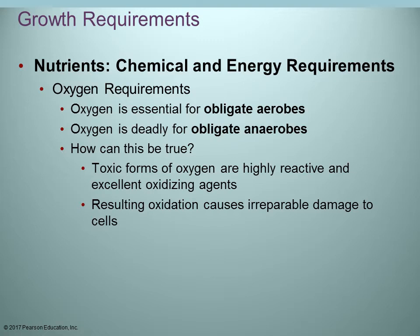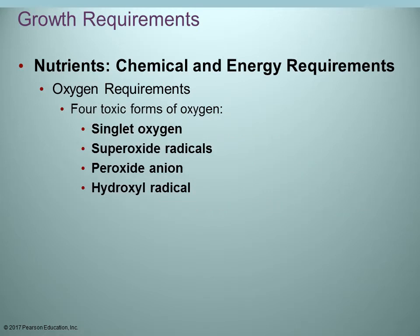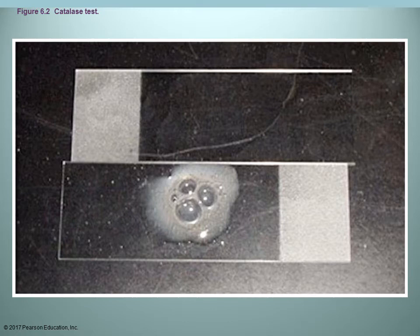In terms of oxygen requirements: if oxygen is absolutely necessary, it's known as an obligate aerobe. If oxygen can be fatal and deadly, the organism is known as an obligate anaerobe — oxygen will actually kill it, requiring special working conditions in the lab. You can look at different forms of oxygen such as singlet oxygen, superoxide radicals, etc. One test to see how oxygen affects organisms is the catalase test: you add hydrogen peroxide, and if the enzyme catalase is present, it breaks hydrogen peroxide down to water and oxygen — that bubbling you see is the formation of oxygen.